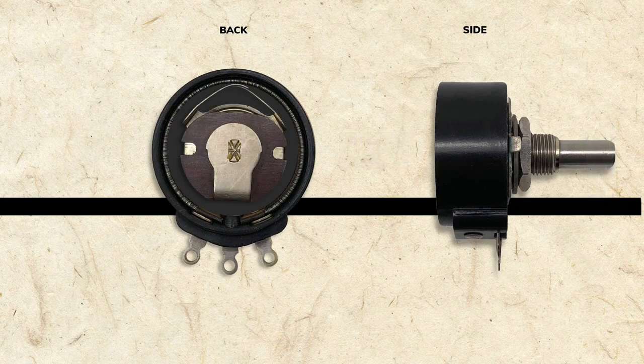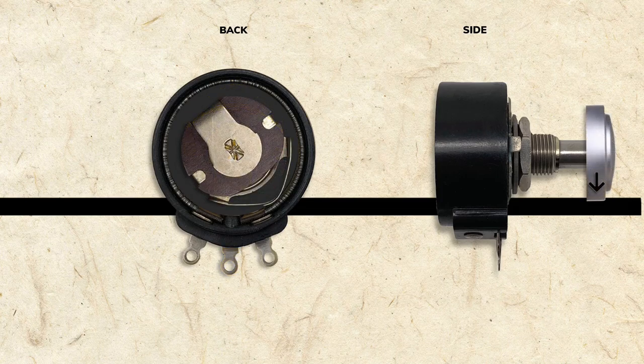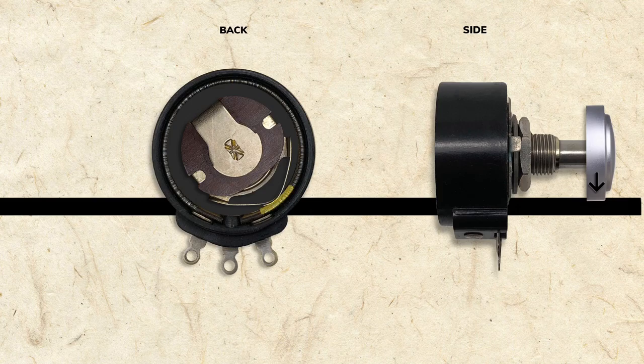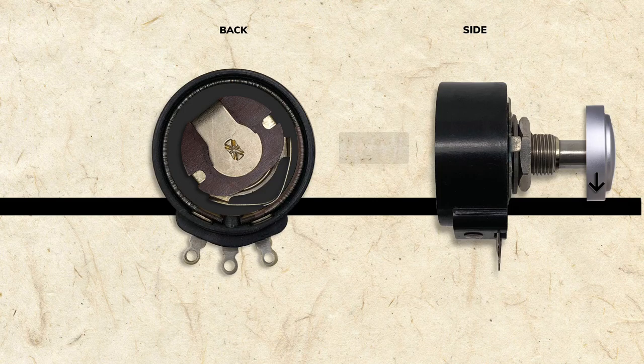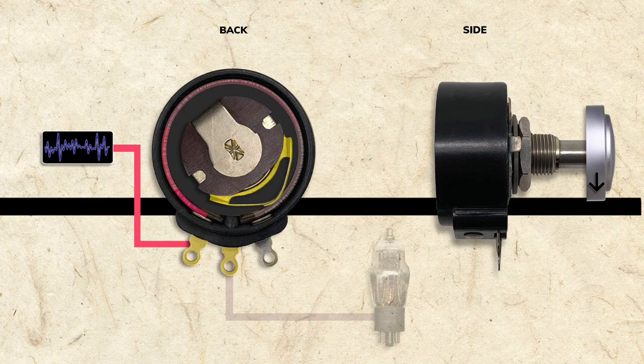Thanks to the wiper, we can do just that. The center terminal is attached to the wiper's contact point. When the knob is turned fully counterclockwise, it rotates the wiper to contact the part of the resistor with the most resistance and weakest signal. When the signal flows into the resistor, it's picked up by the wiper, sent out of the middle terminal and to the tube grid.